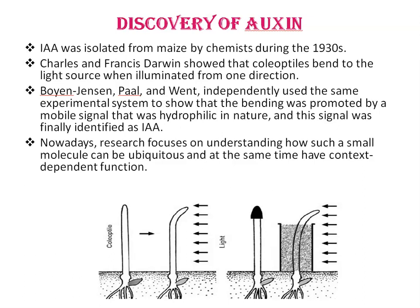IAA was isolated from maize by chemists during the 1930s, but its existence had been hypothesized several decades earlier. For example, Charles and Francis Darwin hypothesized the existence of a mobile signal that promotes elongation of grass coleoptile. In simple and elegant experiments, they showed that the coleoptile bent toward the light source when illuminated from one direction.